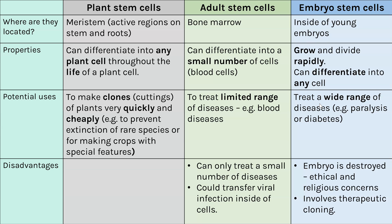Embryonic stem cells, because they can differentiate into any type of cell, could be used to treat a wide range of diseases. You would allow the stem cell to differentiate into a particular specialised cell to replace faulty ones. For example, you could replace cells in the pancreas to treat diabetes, and replace damaged neurons in the spine to treat paralysis. The downside is that taking the stem cells from an embryo destroys the embryo, which involves lots of ethical and religious concerns.